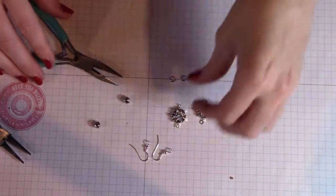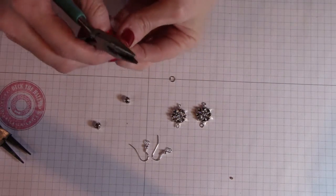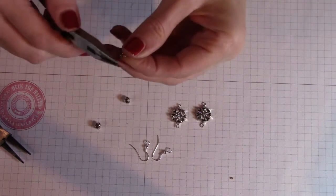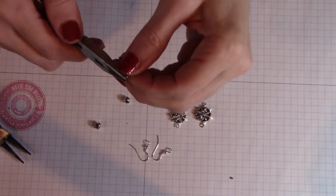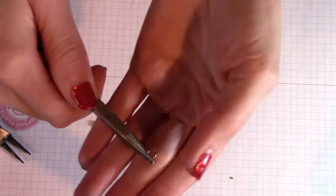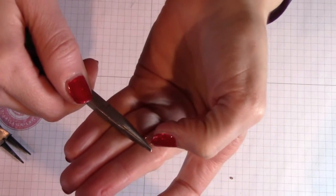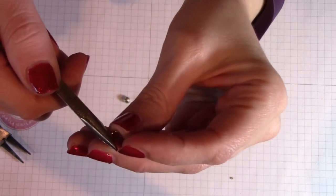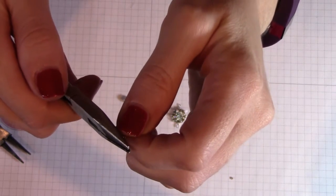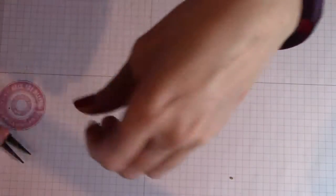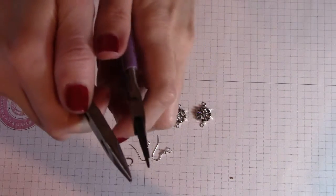Now let us take the jingle bells and our jump rings. So this is where having both the round nose and the needle nose come in handy. So you've got your little centerpiece there that is not soldered together. And we're going to put the needle nose pliers on one side and we're going to use the round nose pliers.